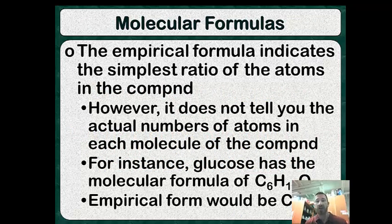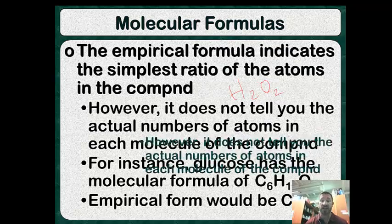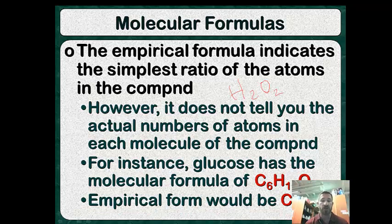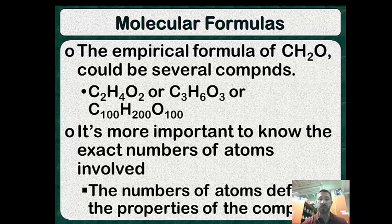Now let's talk about how to do molecular formulas. The empirical formula indicates the simplest ratio of atoms in a compound, but it doesn't tell you the actual numbers of atoms. For example, hydrogen peroxide is H₂O₂, but its empirical formula is just HO. Glucose has a molecular formula of C₆H₁₂O₆ and an empirical formula of CH₂O. Many different compounds can share that same empirical formula — it could be C₂H₄O₂, C₃H₆O₃, or even C₁₀₀H₂₀₀O₁₀₀.